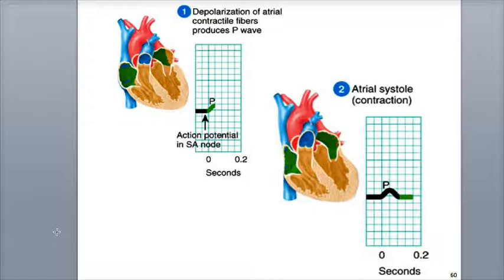The SA node, also called the pacemaker, found in the right atrium, generates a cardiac muscle action potential, which takes about three hundredths of a second to travel through both the right atrium and left atrium, and down to the AV node, which is located at the base of the right atrium. The atrial contractile fibers depolarize, which produces the P wave in the ECG. As the P wave begins, both atria contract during atrial systole.